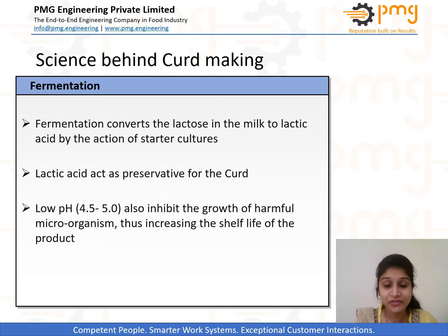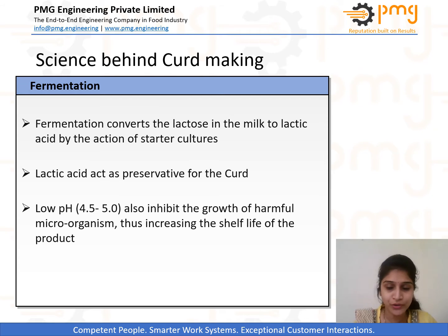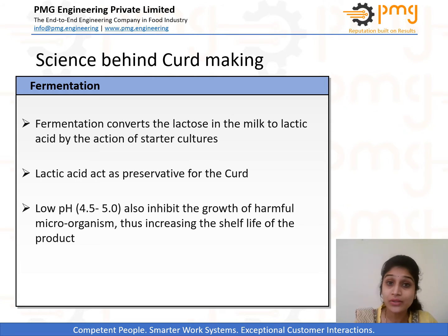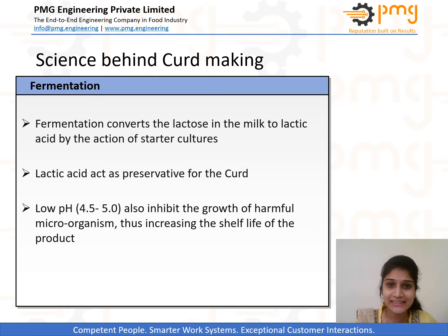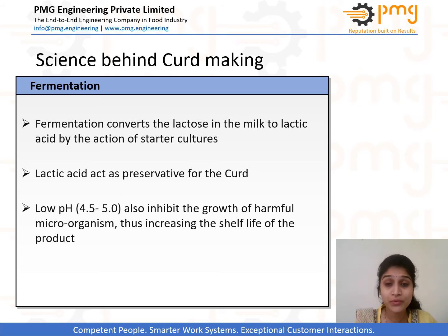As you can see, fermentation is the science behind curd making. Fermentation is one of the simplest ways of preserving milk constituents for human consumption. During fermentation, bacteria ferment the sugar lactose into lactic acid, and this lactic acid makes the milk more acidic, lowering its pH, causing the proteins in the milk to coagulate and turning it into curd. Thus the acidity gives the curd its tangy flavor while the coagulated proteins result in a thick and creamy texture.